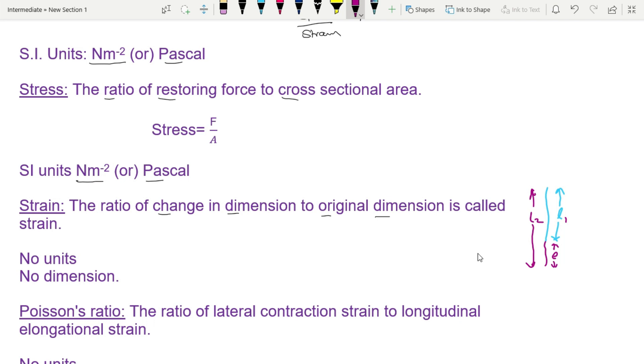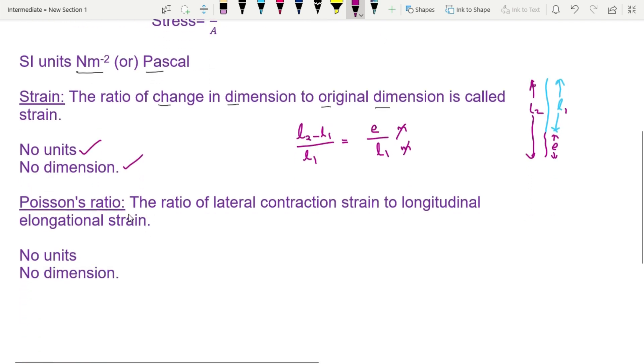Change in length by original length, that is equal to L2 minus L1 by L1. Change in length by original length equals L2 minus L1 divided by L1. Units cancel out, so no units, no dimensions.